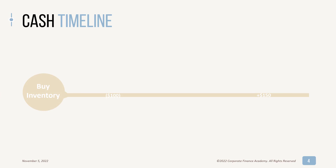So the cash timeline — here we're really talking about businesses that sell a product. It could be a retail business or a manufacturing business that makes and sells a product. This is the general flow of how a business would operate. The first thing you're going to do is buy your inventory. For a manufacturing business, they're going to buy raw materials and turn them into a product, but for simplicity we'll talk about just buying inventory.